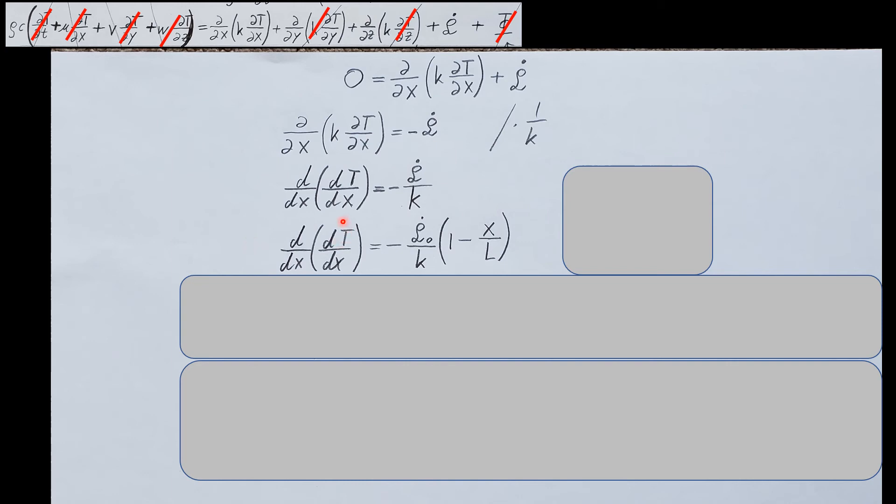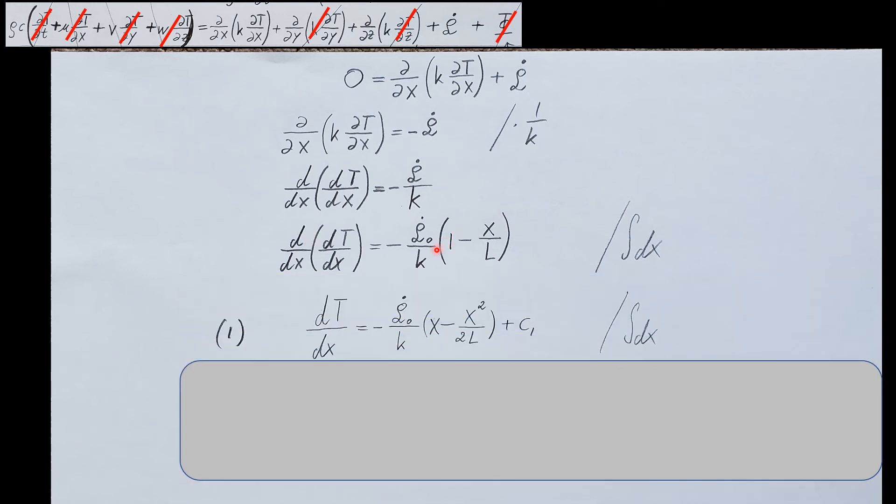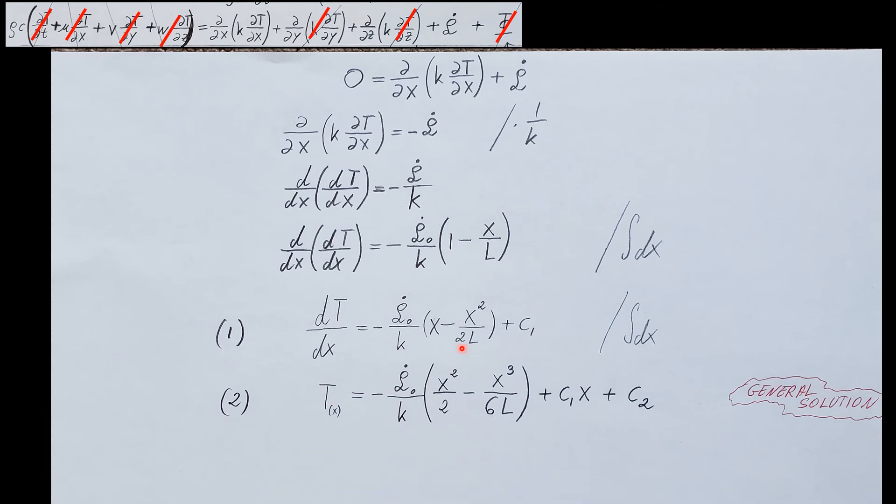This is the differential equation that describes the heat in our wall. In order to find the temperature distribution here, we need this guy T all by itself without all these derivatives hanging around. So in order to get that we're gonna have to take an integral of both sides two times. First integral is gonna give us this, second integral is gonna give us this. This is the general solution of the differential equation that we started with.